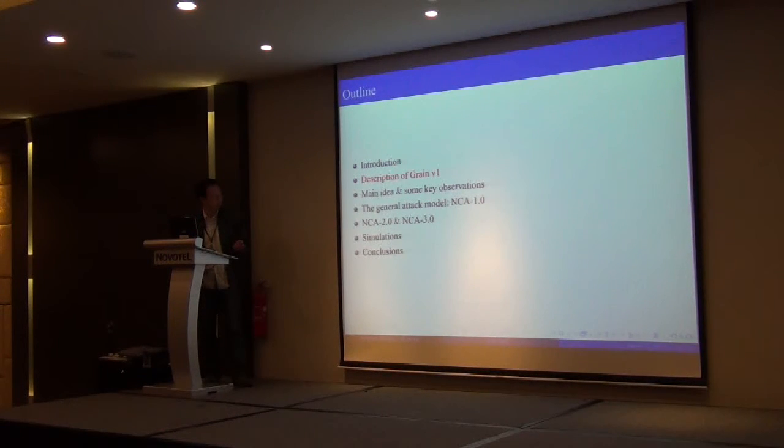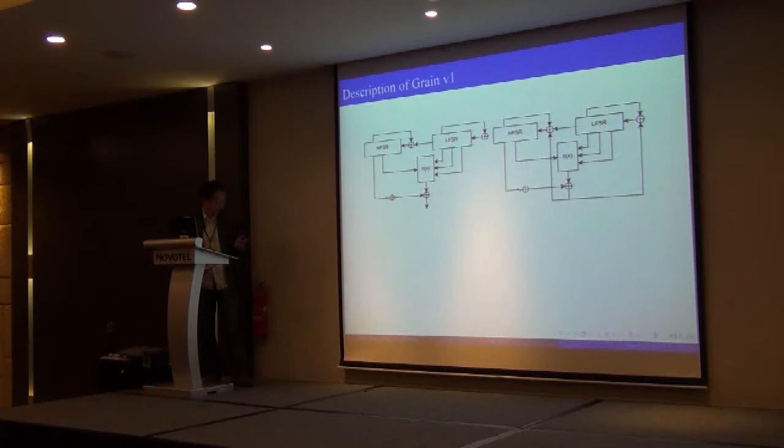And now we look at the description of Grain-128. This is the keystream generation phase. There are two registers in Grain-128: one linear feedback shift register, one nonlinear feedback shift register. And there is also a nonlinear filter function at each clock. The linear feedback shift register is updated independently, but it acts together with the feedback function of the nonlinear feedback shift register. And then the contents are combined by a nonlinear function, which is correlation immune of the first order. And the output of this function is XORed with 7 bits from the nonlinear feedback shift register to produce the keystream bit.